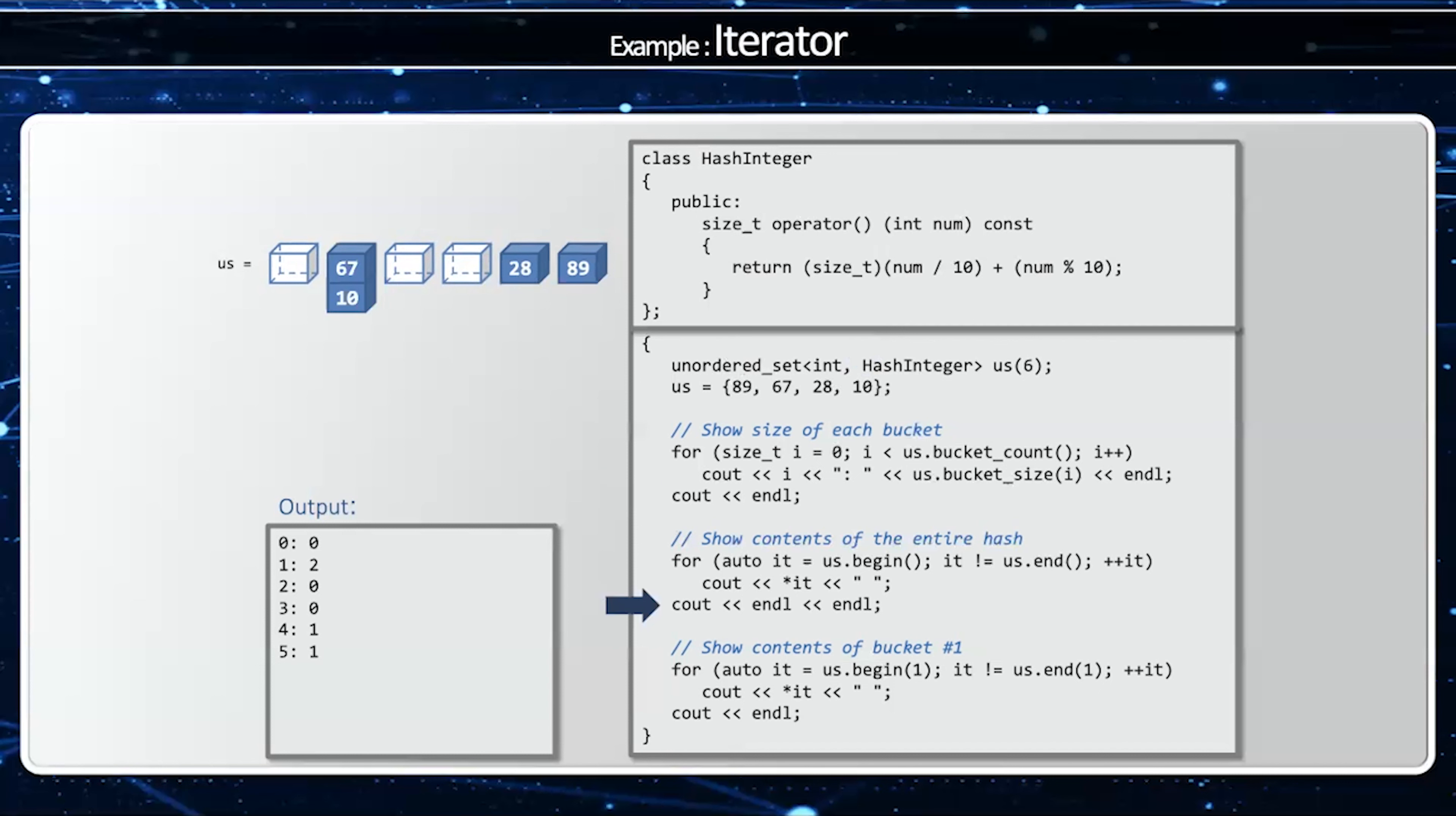I'm going to show the contents. The iterator is going to start at bucket 0. There's nothing there. Then go to bucket 1, 67, 10.